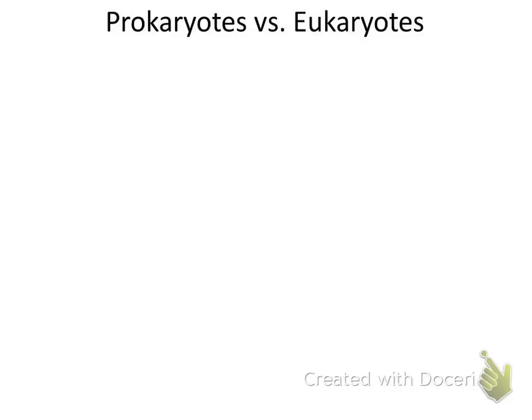Let's first talk about the two major types of cells. There is one that is considered simpler — that's the prokaryotes. I hate to call them simple, though. They are incredibly diverse, and they still manage to kill large numbers of humans each year, and that is the bacteria. Prokaryotes are bacteria.